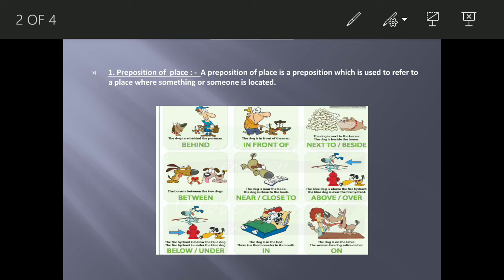For example, behind. The dogs are behind the postman. The dog is in front of the man. The dog is next to the bones. The dog is beside the bones. The bone is between the two dogs. The dog is near the book. The dog is close to the book.